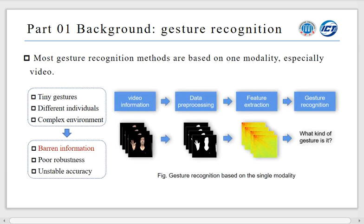However, most gesture recognition methods are based on one modality, especially video modality. They recognize gestures by extracting features and training models in video information. But gesture recognition with high accuracy is a difficult task because some tiny gestures, individual differences, and the complex observation conditions which are changeable and difficult to spot. Most methods only have one modality information, so it has some disadvantages: barrier data, poor stability, and unstable accuracy.